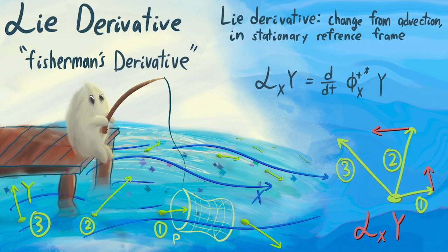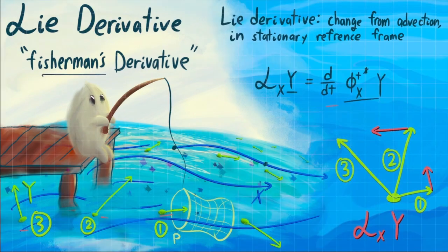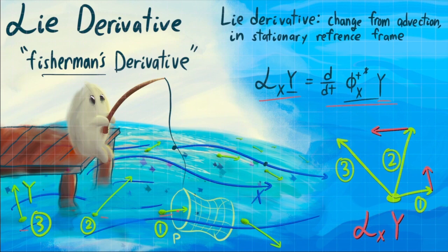Which brings us to the Lie derivative — or, in what I think is a more evocative name, the fisherman's derivative. The Lie derivative basically says: let's look at the vector field as it goes through the fisherman's net, and look at its different values over time. Here's the first one, then it evolves some time t and you get the second, then the third. The question is how does that change? That quantity is the Lie derivative — it's just a time derivative of the push forward of y, what happens when you advect y under the flow, evaluated at a given point. In other words, Lie derivatives in general are the change you get from advection in some stationary reference frame.